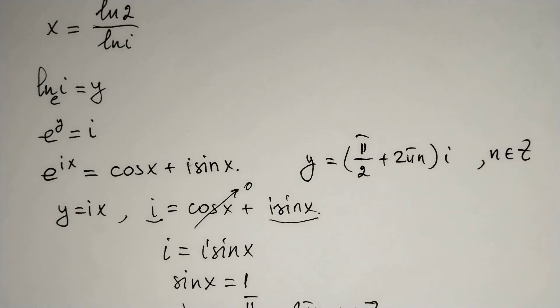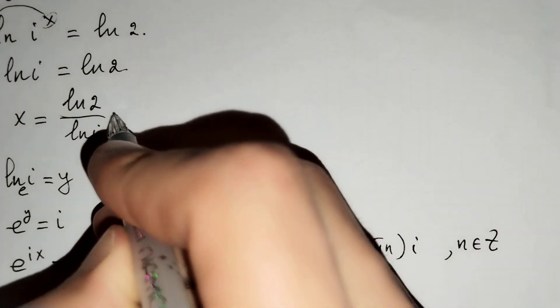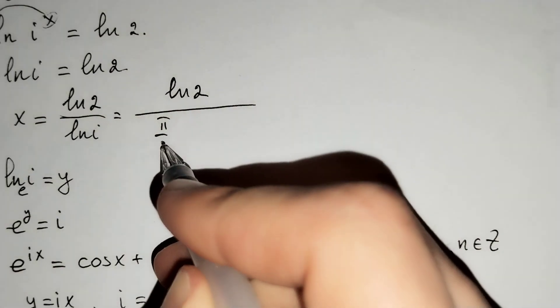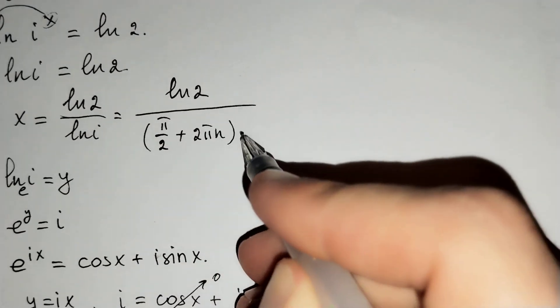And let's put it above: x equals ln 2 over ln i, which is ln 2 over pi over 2 plus 2 pi n times i.